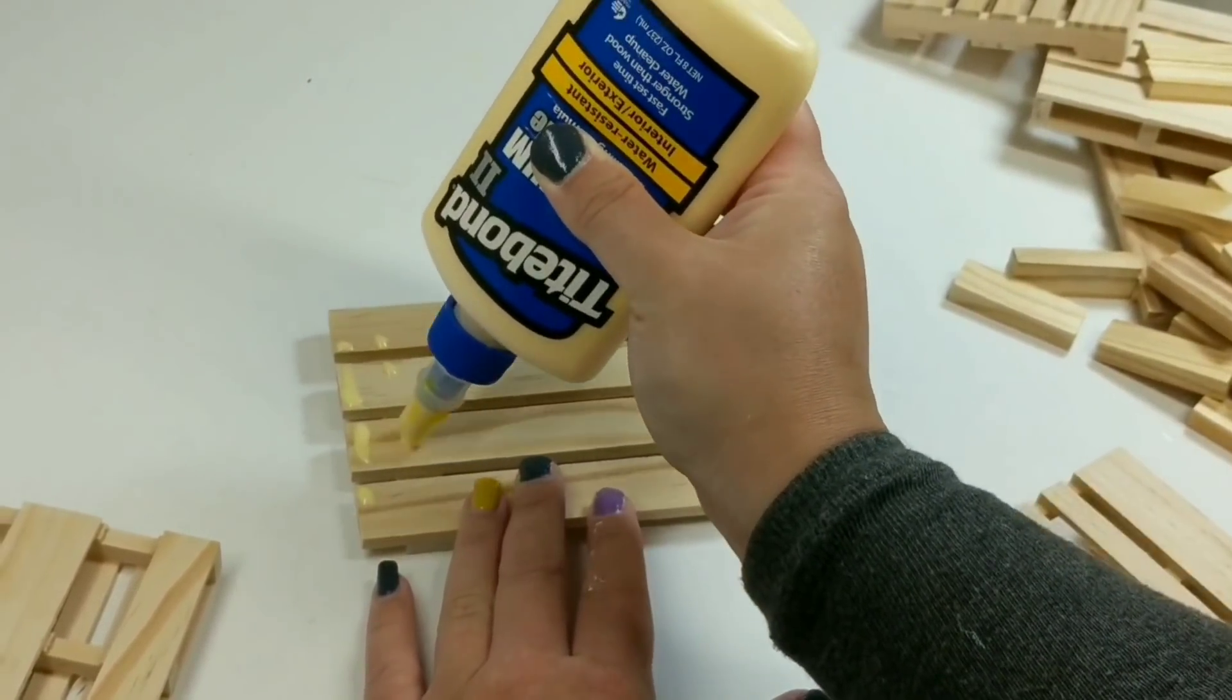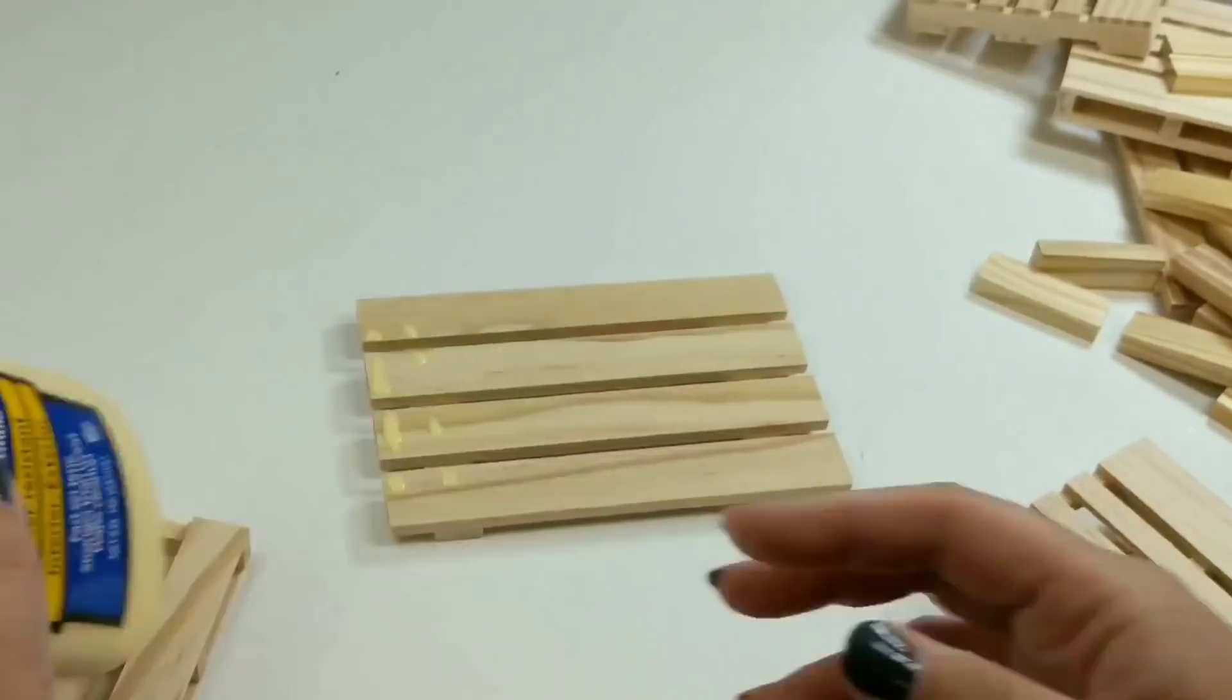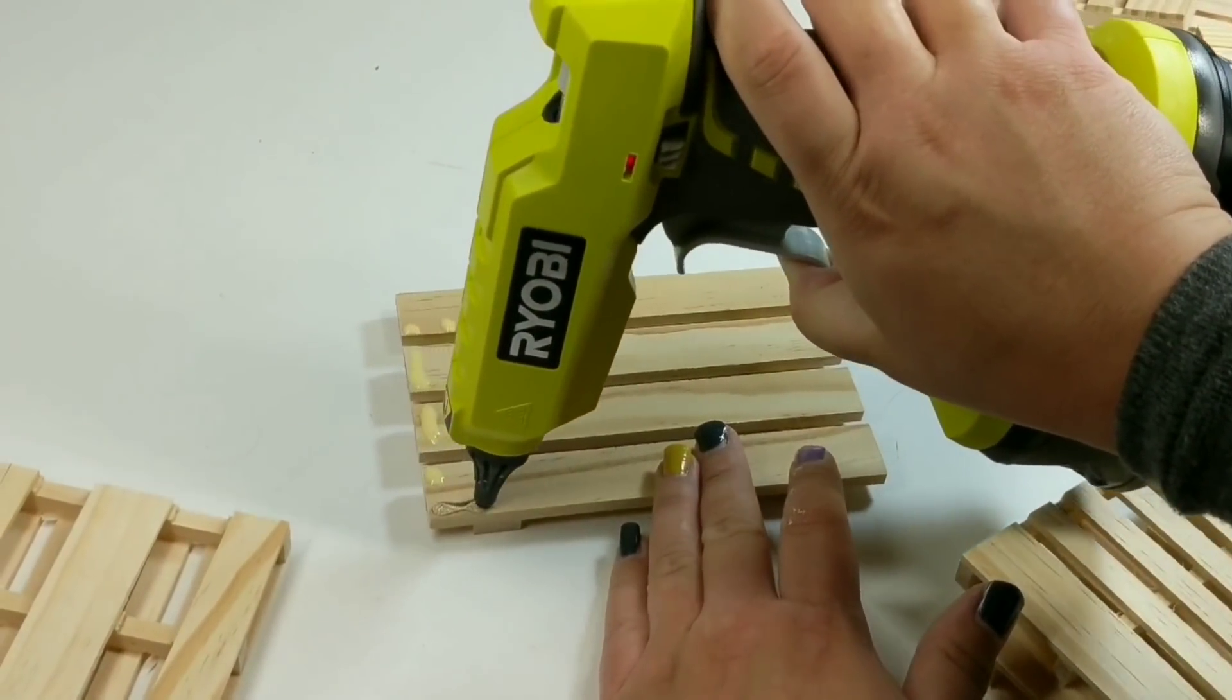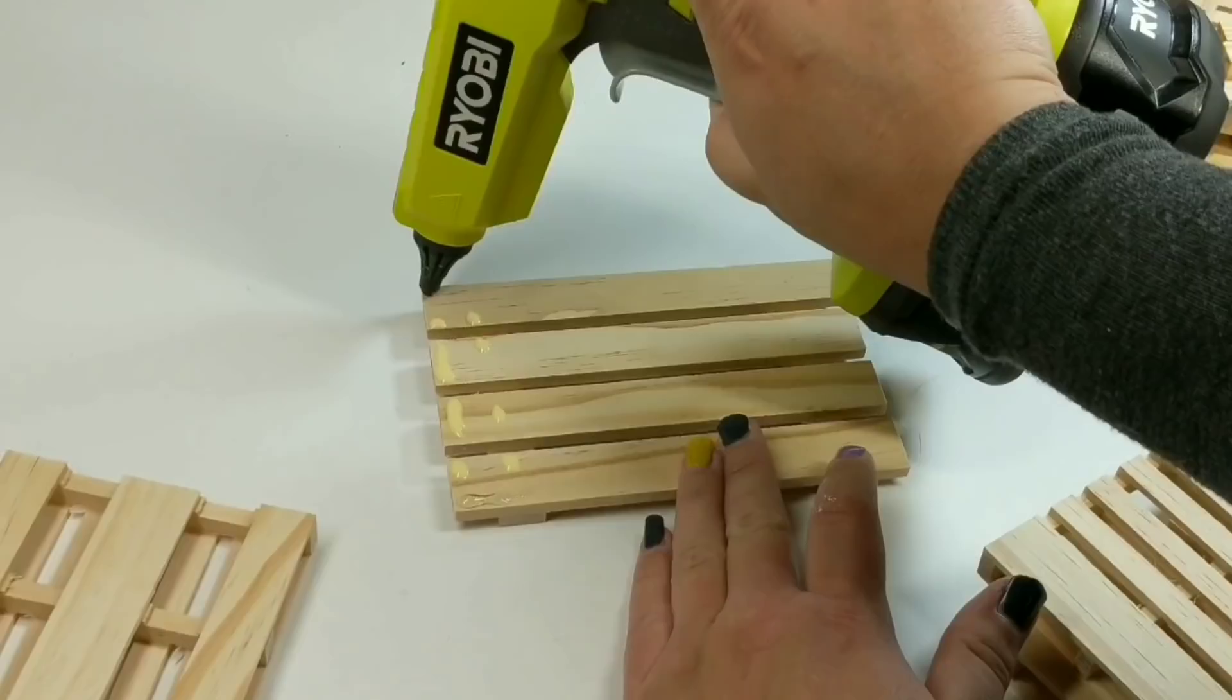Now, to recreate this one, you're gonna need a long pallet and three small pallets. And you're gonna need two tumbling blocks, six on each side.